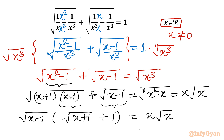Now I can move the square root of (x − 1) to the right, because x = 1 is not a solution of the original equation. If we put x = 1: left hand side gives 0 (since 1 − 1 = 0 in both terms), but right hand side is 1. So we can divide both sides by square root of (x − 1).